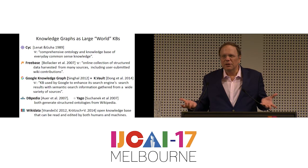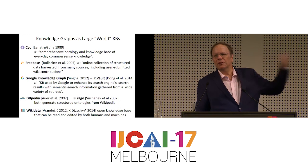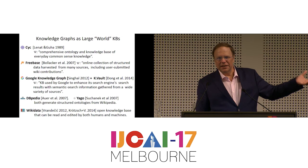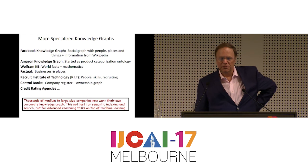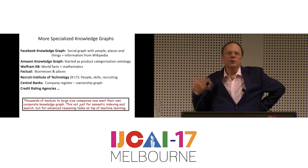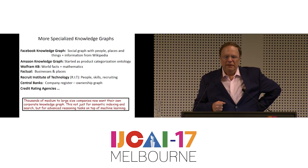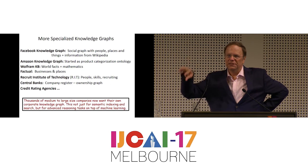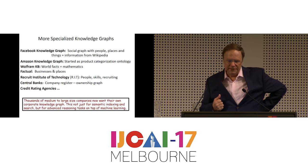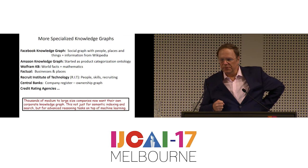These are knowledge graphs containing world knowledge, like who was the president, number of inhabitants, et cetera. There are also more specialized knowledge graphs: the Facebook Knowledge Graph, Amazon Knowledge Graph that started with a product ontology, the Wolfram Knowledge Base with specialized math knowledge. Factual is a Los Angeles-based company that sells data about businesses and places — much more precise than the yellow pages and more up-to-date. Recruit Institute of Technology is building a huge knowledge graph about people, skills, and recruiting-related topics.